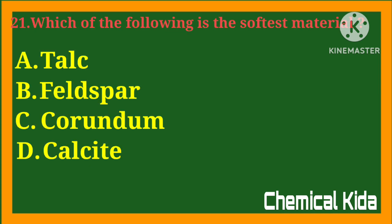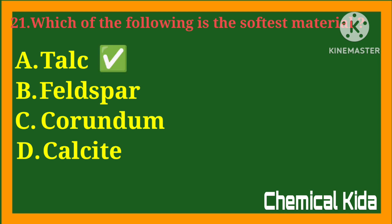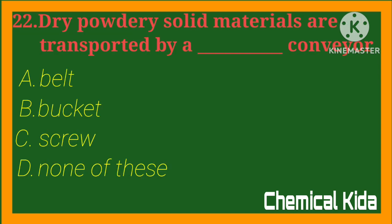Which of the following is the softest material? a) talc, b) feldspar, c) corundum, d) calcite. Answer: a) talc.